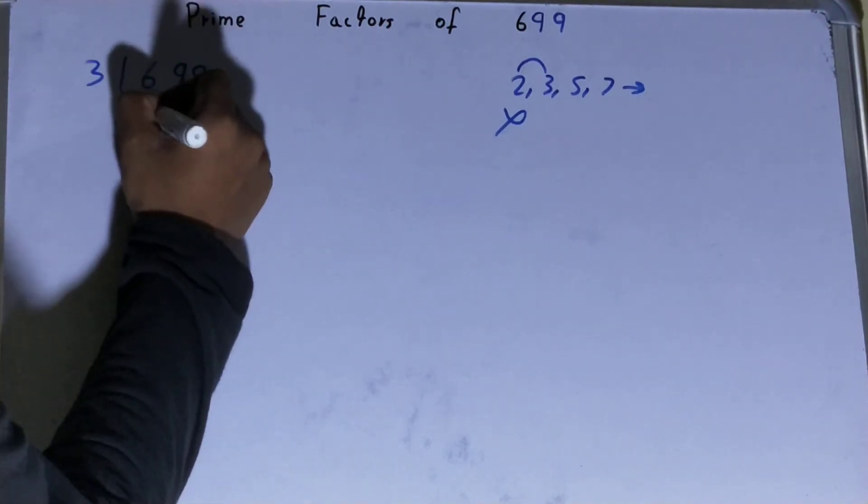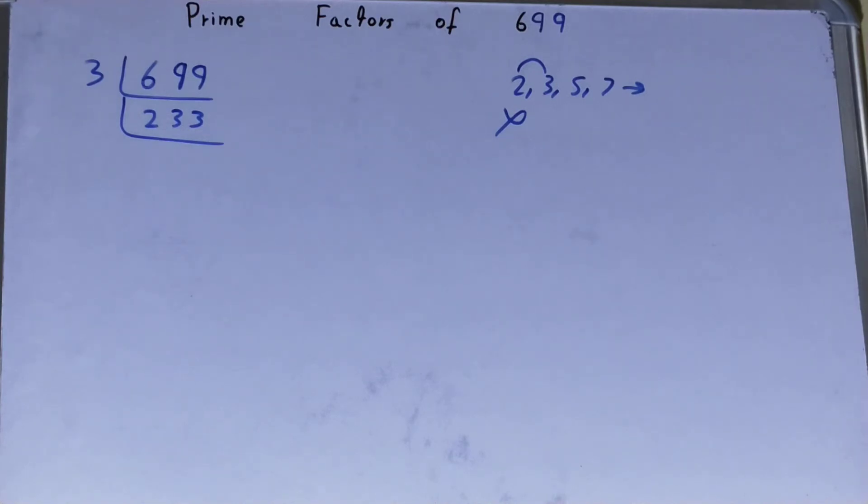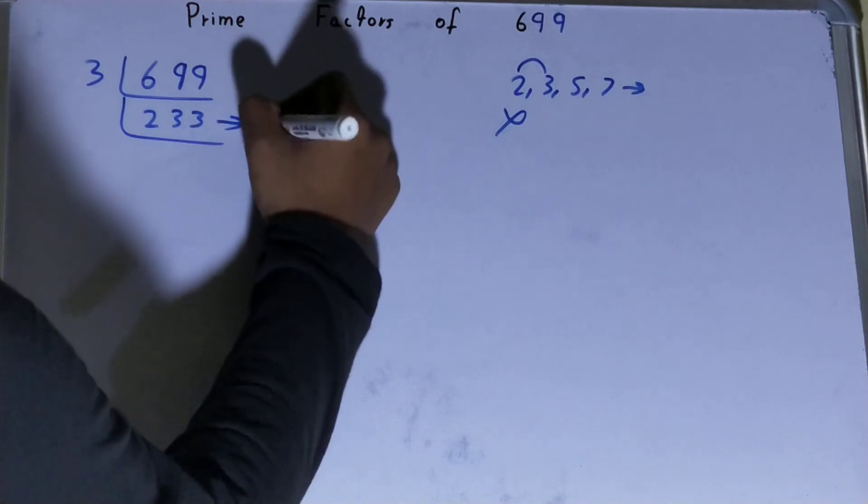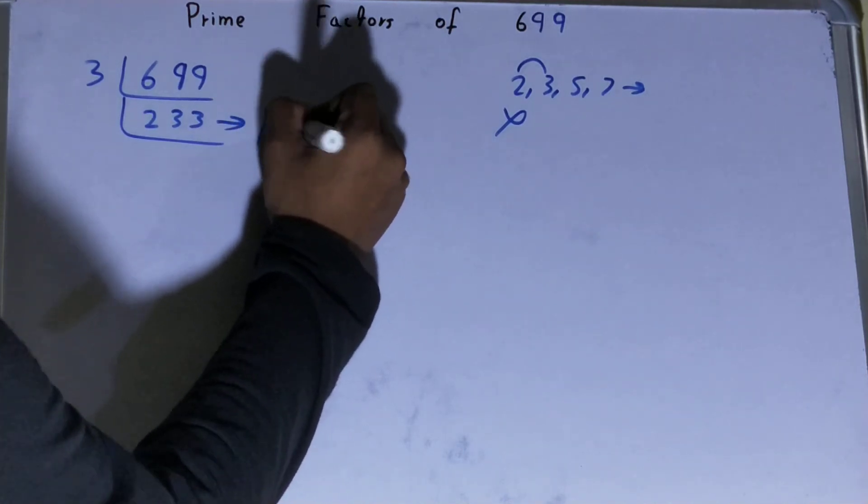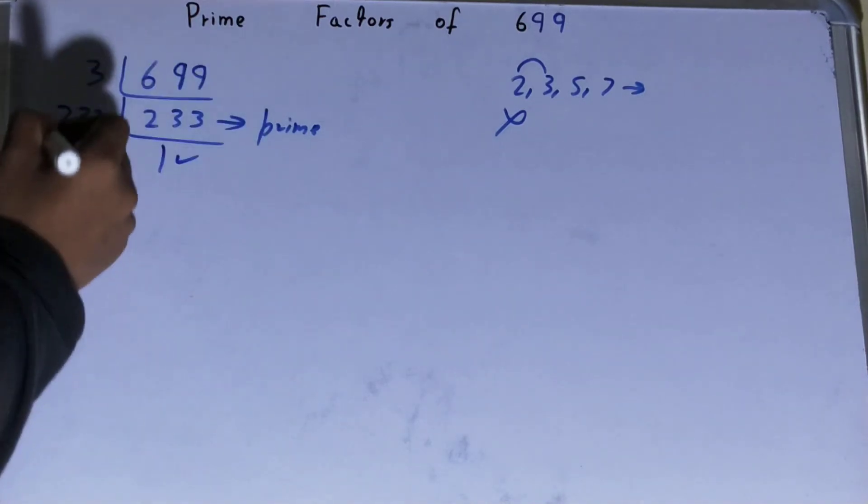You'll be left with 233. Now, is 233 divisible by 3? The answer is no, and it is also a prime number. So 233 is only divisible by itself, and when you divide it by itself, you'll be left with 1. Once you're left with 1, the work is done.